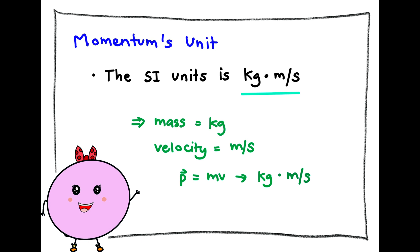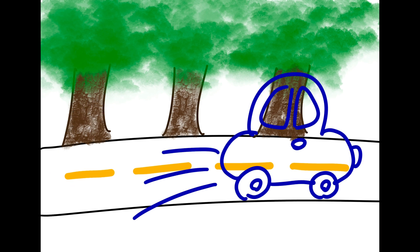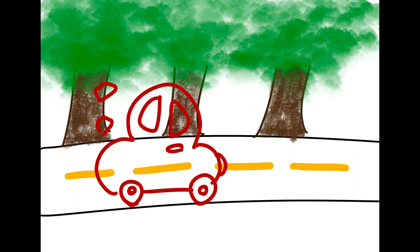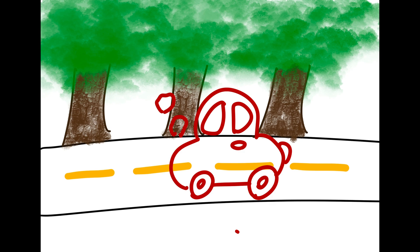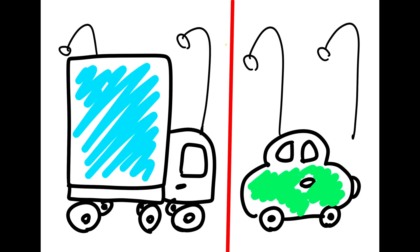The SI unit of momentum is kilogram times meter per second. For example, a fast moving car has more momentum than a slow moving car of the same mass, or a heavy truck has more momentum than a small car moving with the same speed. The more momentum an object has, the harder it is to stop it.